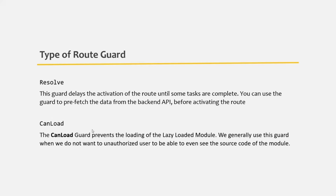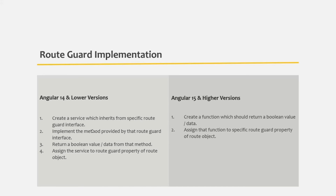So this was a high-level overview of what route guards are in Angular, what the different route guards are, and which route guard we use for what purpose. Now in the latest versions of Angular — that is from Angular 15 and higher — Angular has introduced a new way of implementing route guards. Till Angular 14, in order to implement a route guard, we used to inherit a route-guard-specific interface for the service class and provide the implementation of its method.